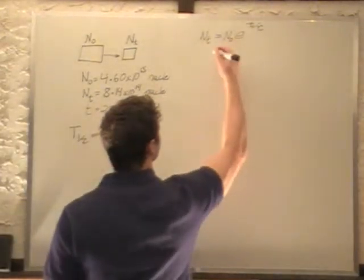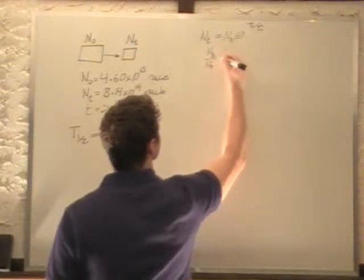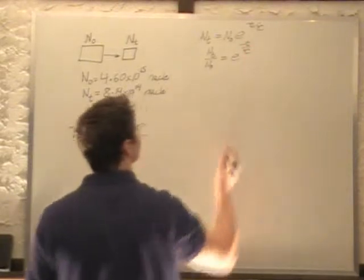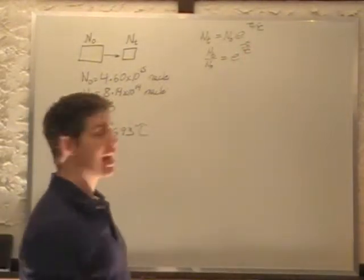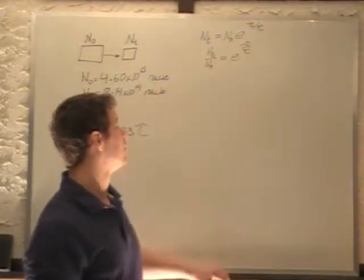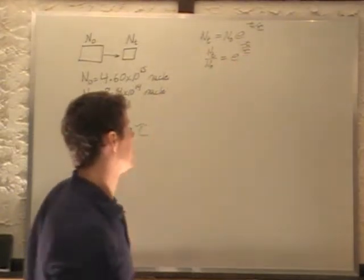I start by dividing. N at time t divided by N initially equals e to the minus t over tau. Now I have to take the natural log of both sides to get rid of this e to this stuff. It's basically a log with base e, and that will get rid of e and just give you minus t over tau.